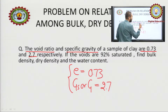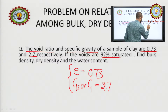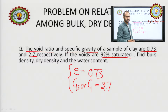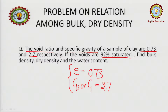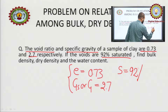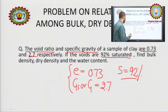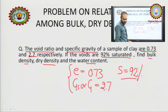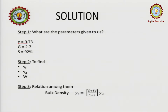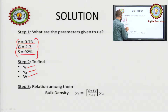Further, if the voids are 92 percent saturated — what does this mean? This is actually giving us the degree of saturation of the soil. Degree of saturation S = 92 percent. We have to find three things: bulk density, dry density, and water content. Three things are given to us: E, G, and S.